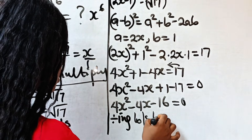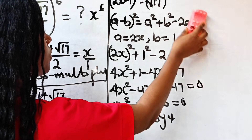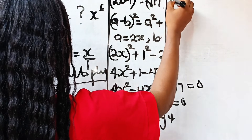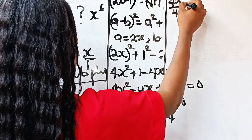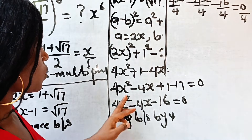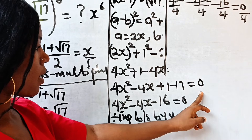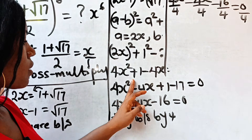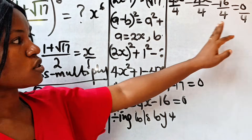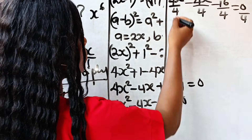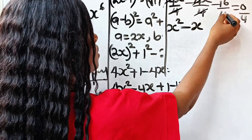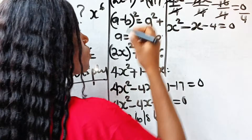Dividing both sides by 4: 4x² divided by 4 minus 4x divided by 4 minus 16 divided by 4 equals 0. So we are left with x² minus x minus 4 equals 0.